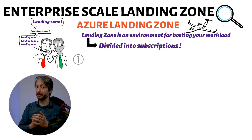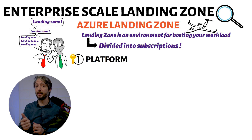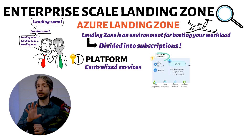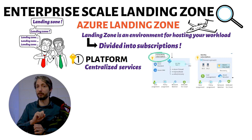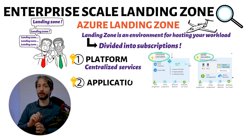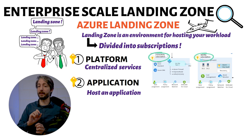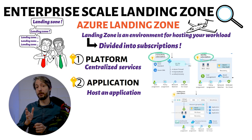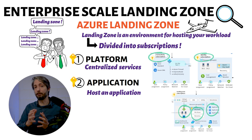There are two types of landing zones. We have the platform landing zones — these are there to provide a centralized service which can be used by all the infrastructure in Azure. Mainly, this is where you put your networking components, a central firewall, identity components such as Active Directory, and anything which will benefit from centralization. Then we have the application landing zones, which are one or more subscriptions deployed to host an actual application — this is where you put application-specific resources such as virtual machines, Azure App Services, and more. Microsoft's best practices state to set up one subscription per application.